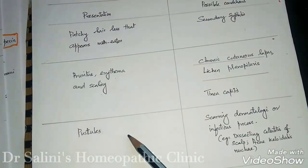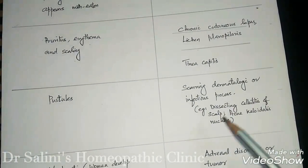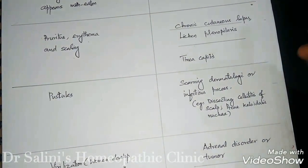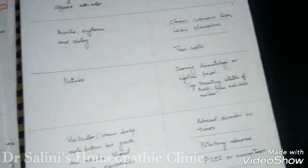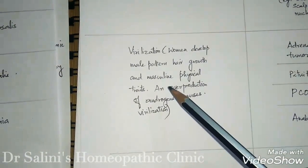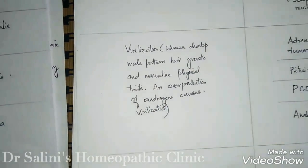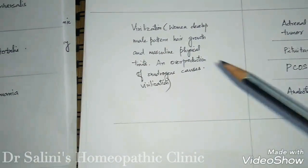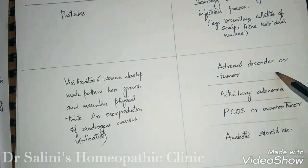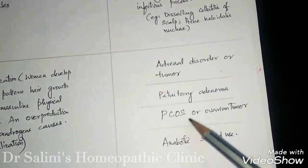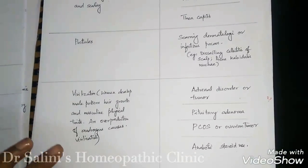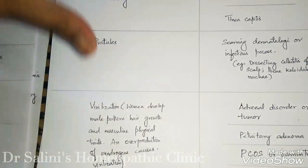Use of tools indicating a scarring dermatologic or infectious process — like dissecting cellulitis, where scalp boils come and burst — or acne can also present similarly. Virilization, where women develop male pattern hair growth and masculine physical traits, is caused by overproduction of androgen. Possible causes include adrenal disorder or tumor, pituitary adenoma, PCOS or ovarian tumor, and anabolic steroid use.